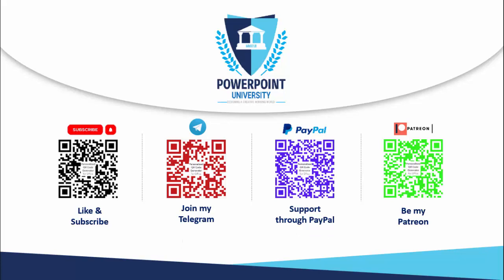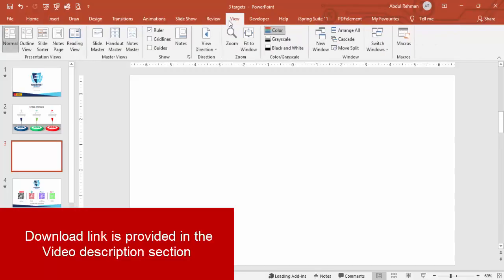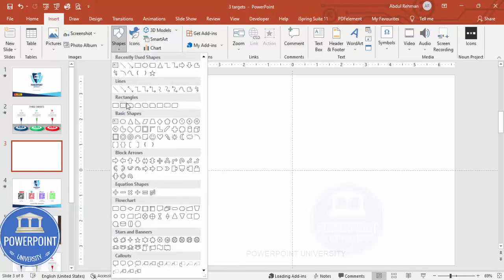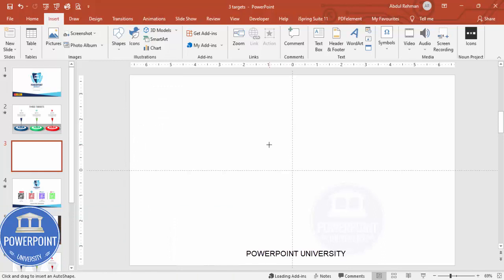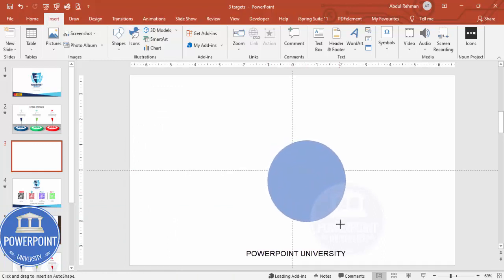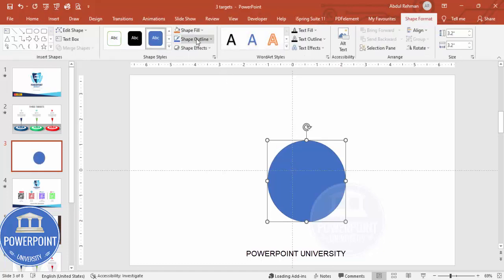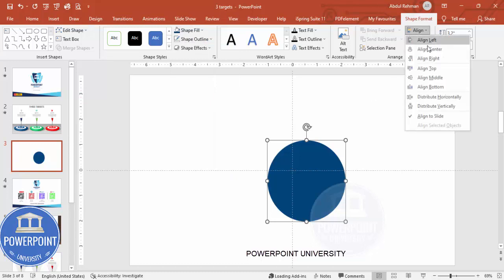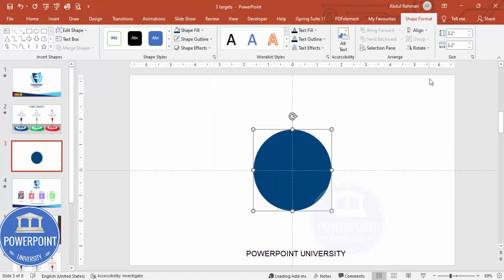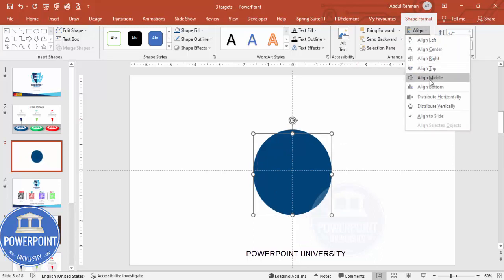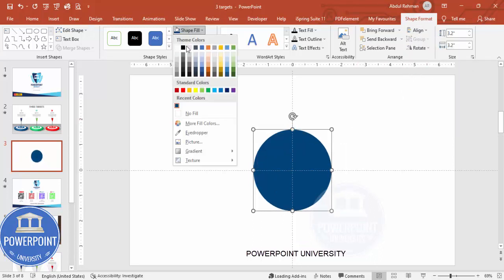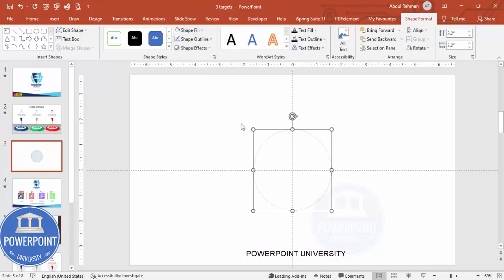Let's start the tutorial. Add a new slide, go to View and enable the guides. Go to Insert, Shapes, from the Basic Shapes choose the oval shape, draw the oval by holding the Shift key so you get a perfect circle. Set the outline to no outline, fill with blue, and align center and align middle. Press Ctrl+D, align center and align middle again, fill this duplicate with white.